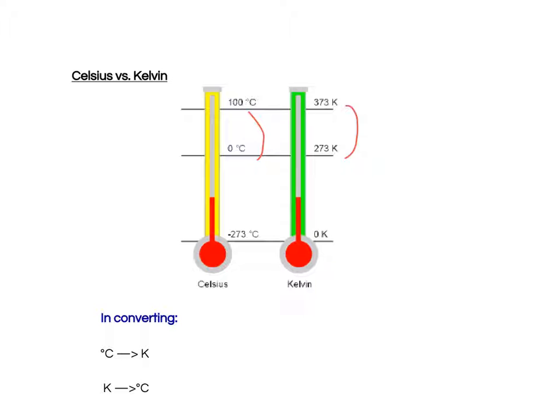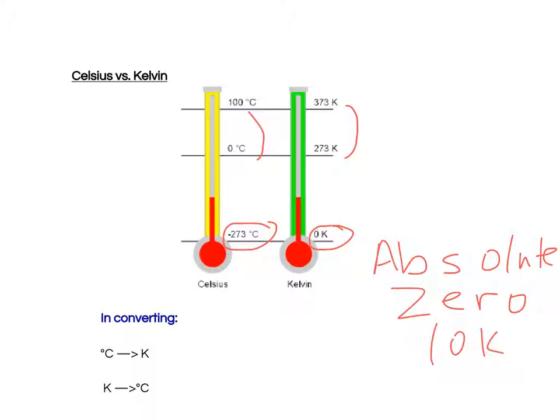Now, one thing that we should know that I want you to note is that there are no negatives on the Kelvin scale. The lowest value Kelvin is zero Kelvin, which is equivalent to minus 273 degrees Celsius. And that has a very specific name. It's called absolute zero. And we're going to talk about that in a second, right? So, absolute zero means zero Kelvin. That's what that means.